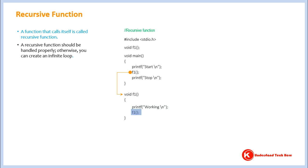Now the computer comes to a point — look carefully — this is a call to function f1. As you can see, function f1 is calling f1. Since function f1 is calling itself, it's a recursive function. So, done with the definition, let's see what happens further.